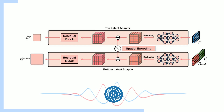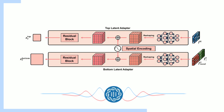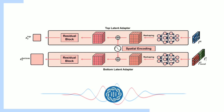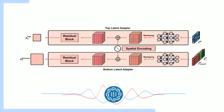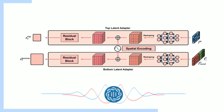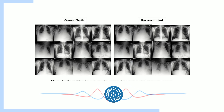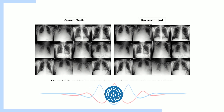We haven't even gotten to the really exciting part yet — the image generation results. One of the key metrics they used is called FID, or Fréchet Inception Distance, which basically measures how realistic and diverse the generated images are compared to real ones. MedUnifier achieved FID scores that were comparable to or even better than other leading AI models. They actually included visual examples in the paper comparing real radiographs to MedUnifier-generated images, and the reconstructed images were nearly indistinguishable from the originals.